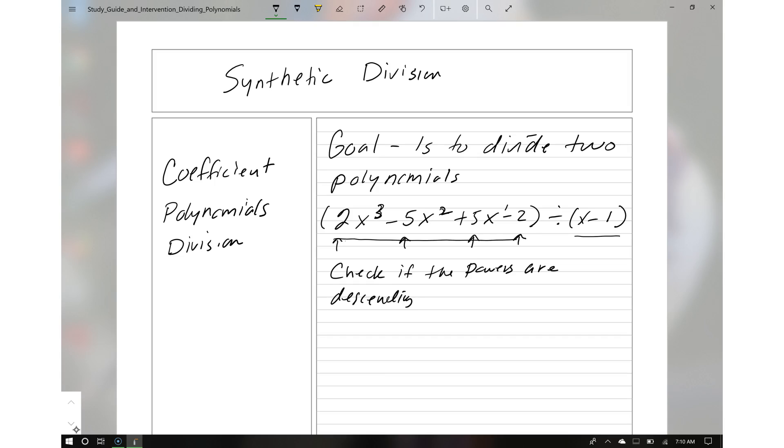You have x minus 1. What you have to do for x minus 1, you have to solve for x. So we add 1 to both sides. So we have x equals 1.